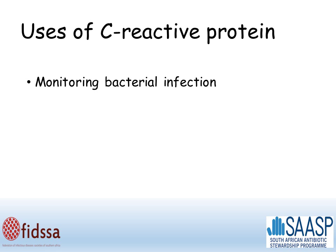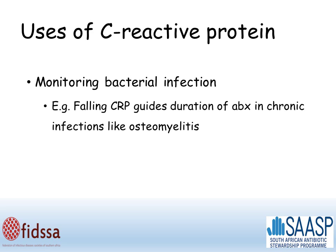CRP is most useful for monitoring bacterial infections. For example, a falling CRP can guide the duration of antibiotics in a chronic infection such as osteomyelitis.